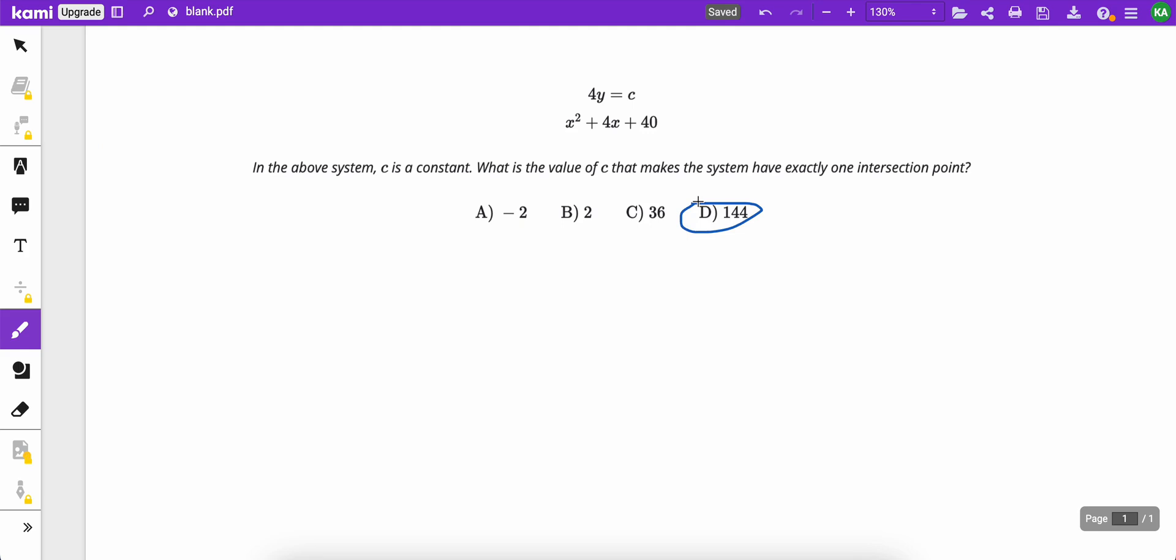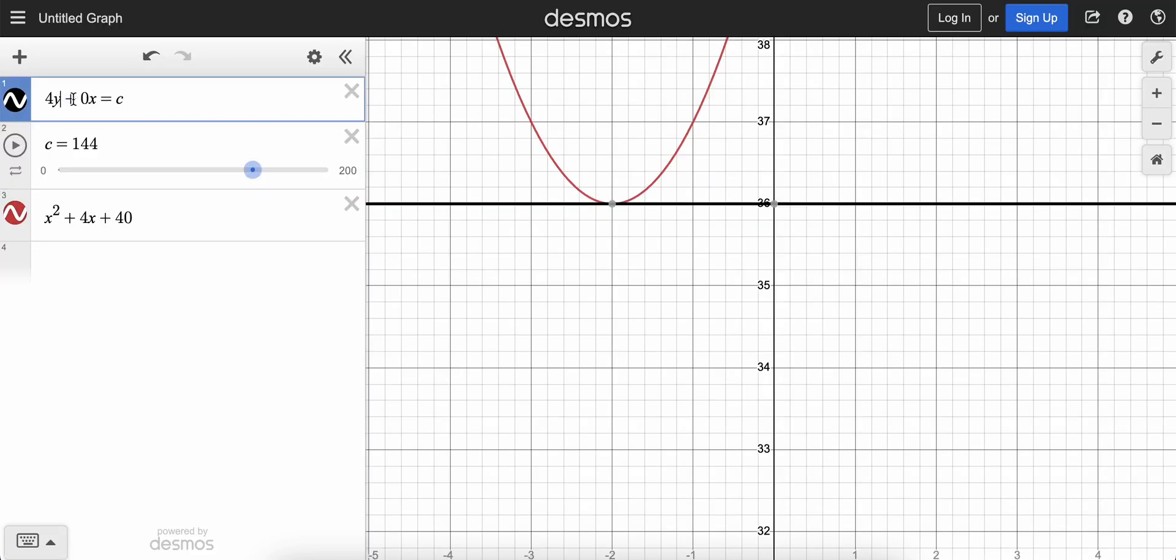But just remember, a slider, you're going to add it in. You could change the values of it. And I guess the other important thing is just remember, we added in this 0x here. Otherwise, it wasn't going to graph it for us. So look for questions where you're going to have to add in 0x, or if there wasn't a y, you could add in 0y. And then it should solve the issue. Thank you.